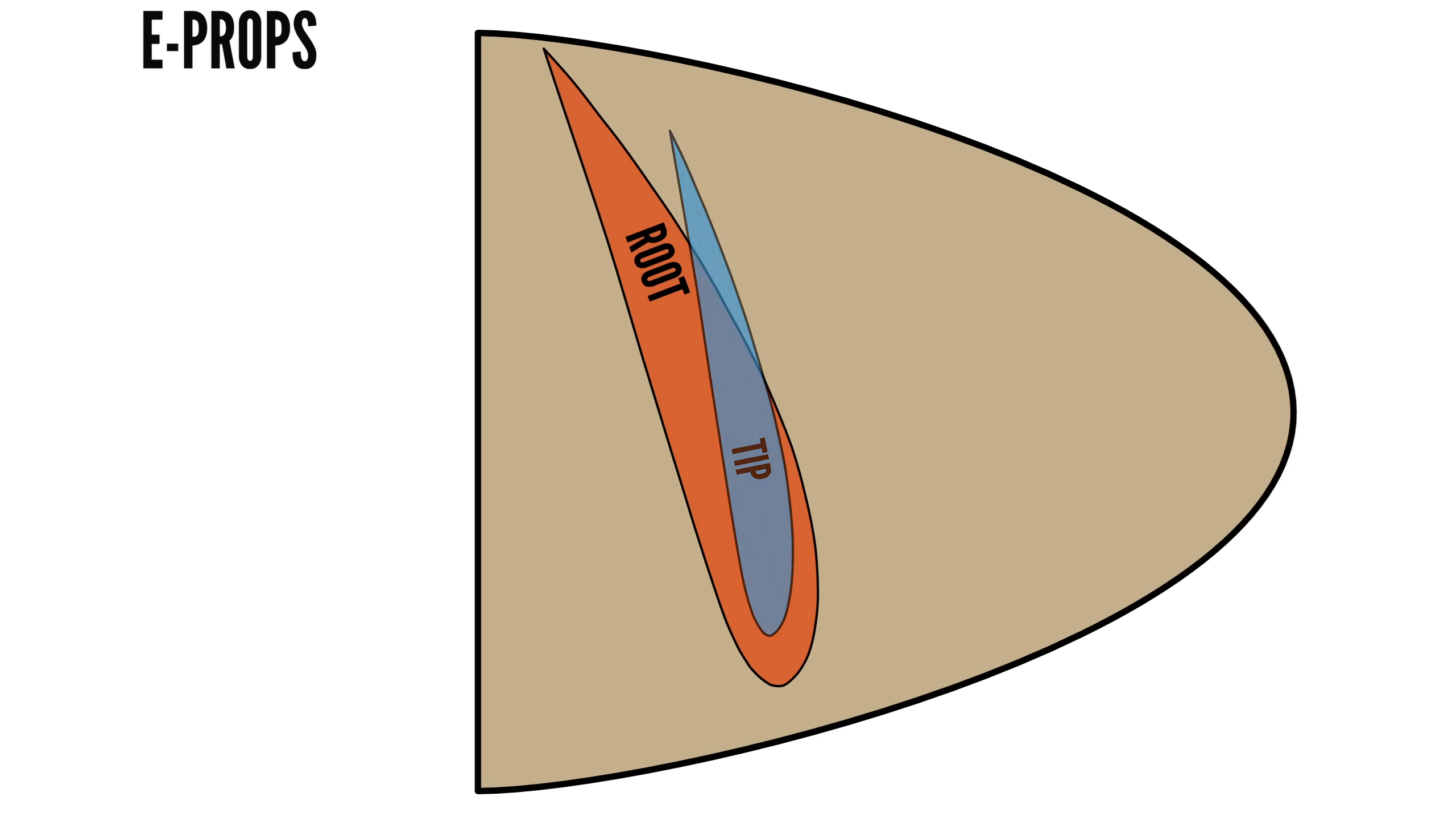The E-PROPS blade root has a finer pitch angle compared to a typical propeller, while the tip has a coarser pitch angle. This design allows the propeller tips to maintain higher loading as the airplane accelerates, keeping RPM lower, compared to a typical propeller for which the lower angle of attack at the tips will result in less loading, substantially increasing engine RPM.